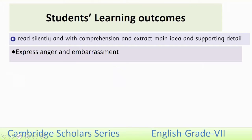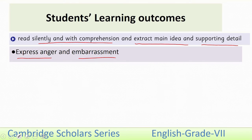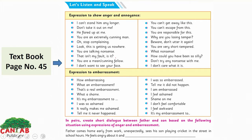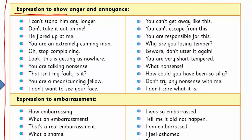The SLOs of this lesson are: read silently with comprehension and identify main idea and supporting detail, express anger and embarrassment. Page number 45 of your textbook. We have a listening and speaking section here — expressions to show anger and annoyance.